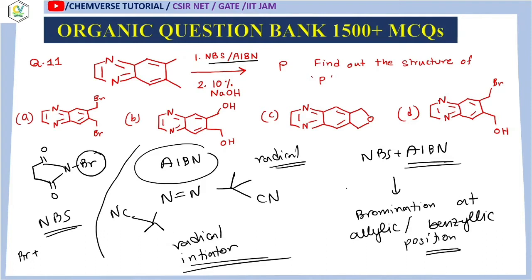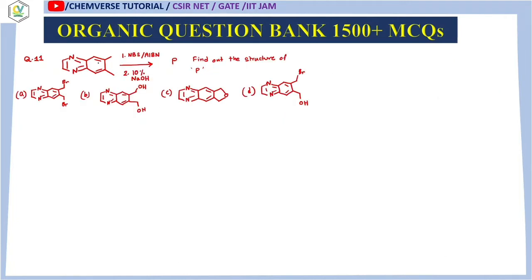This is a very beautiful regiochemical outcome. The allylic position is the alpha carbon with respect to a double bond. The benzylic position is the alpha carbon with respect to a benzene ring. So NBS plus AIBN gives bromination at allylic or benzylic positions. Looking at the starting material structure, the aromatic ring is the aromatic moiety, and the two CH₃ groups attached to it are the benzylic positions.